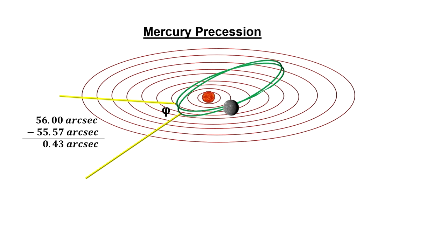Newtonian equations accounted for all but around half an arc second per year. And of course, they couldn't take into consideration the effects of curved space, because the idea that space wasn't flat hadn't been considered yet.